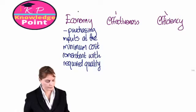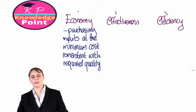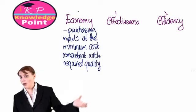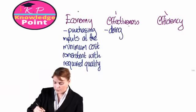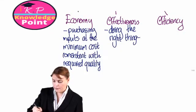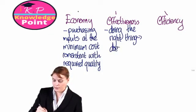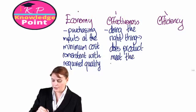What about effectiveness? Effectiveness means doing the right thing. Does our output achieve its required objectives? Does our product do what it's supposed to do? Is it of the right quality? Does it have the functionality it is supposed to have? So effectiveness is doing the right thing — does our product meet the required objectives?